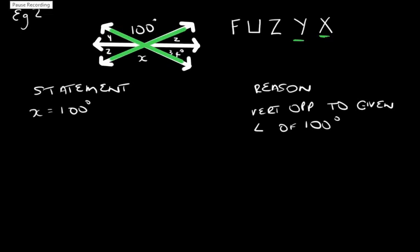Angle X will be equal to 100 degrees. Why? Because it's vertically opposite to our given angle of 100 degrees. What will angle Y be? Angle Y will be equal to 34 degrees. Why? Because it's vertically opposite to our given angle of 34 degrees. So that angle will be equal to this angle.